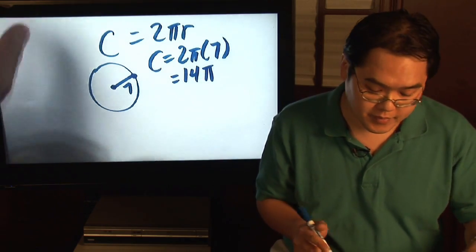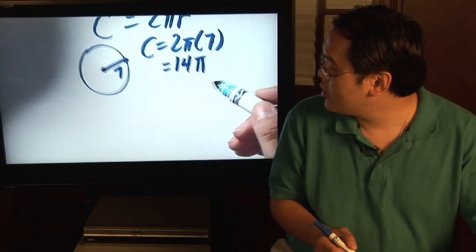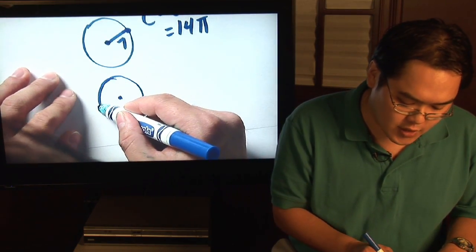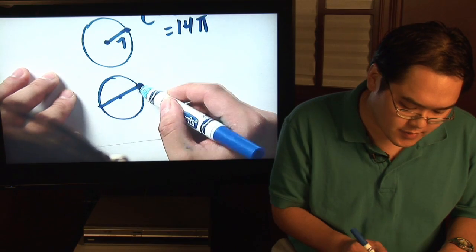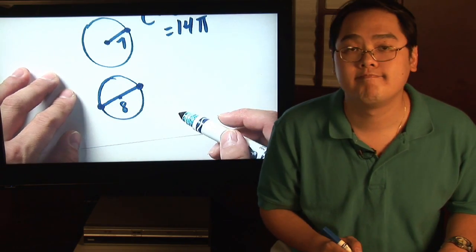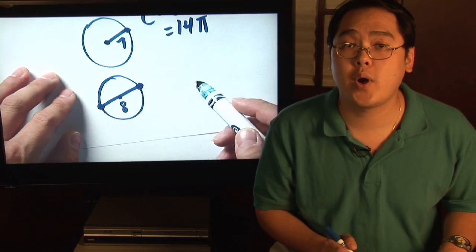The other scenario would be, suppose you have another circle, and you're given that the distance from one end of the circle through the center to the other is 8. That's the diameter. That's twice the radius.